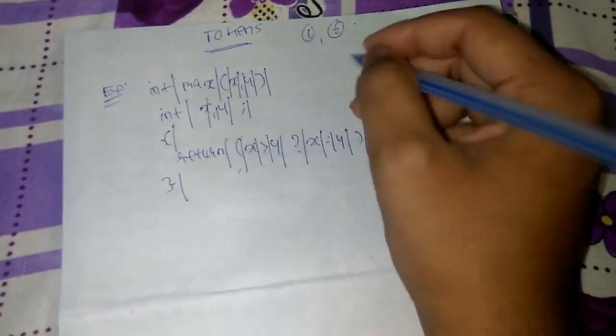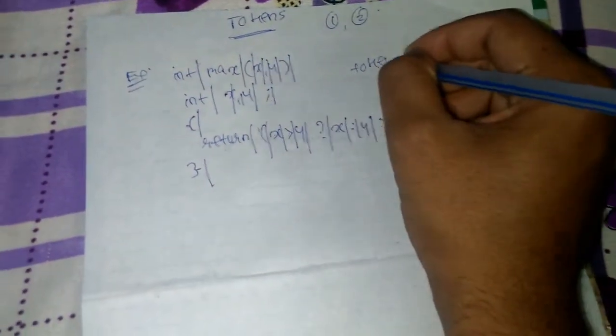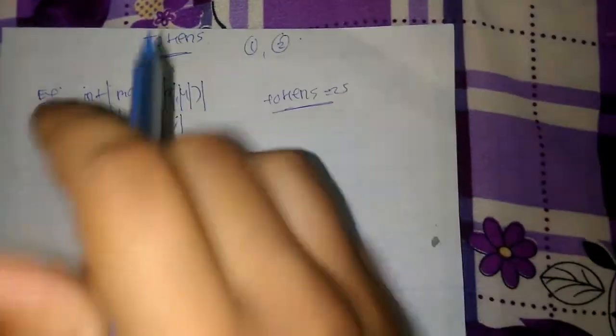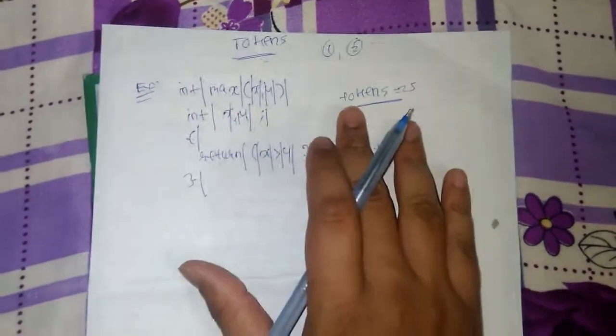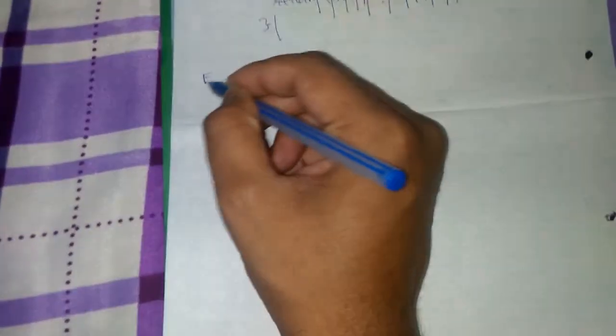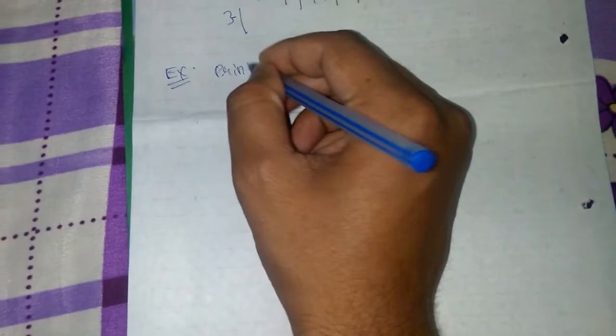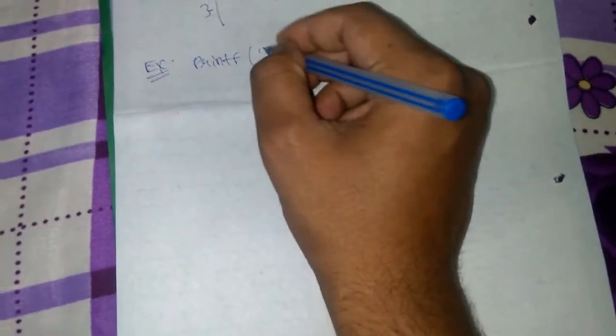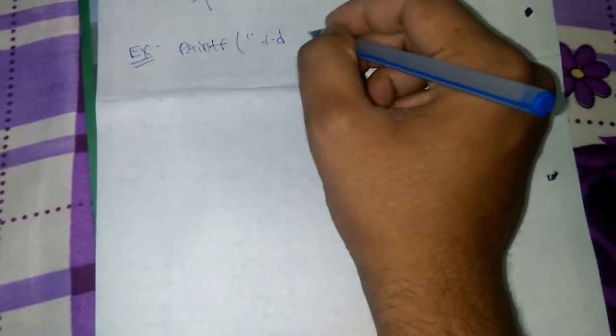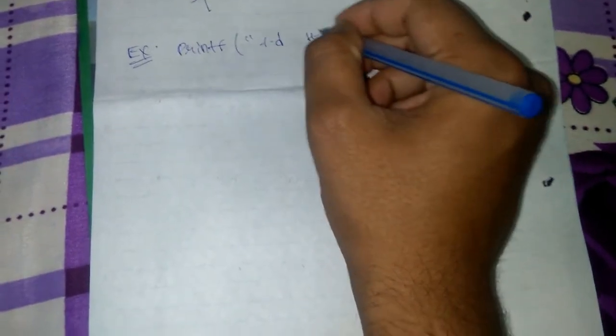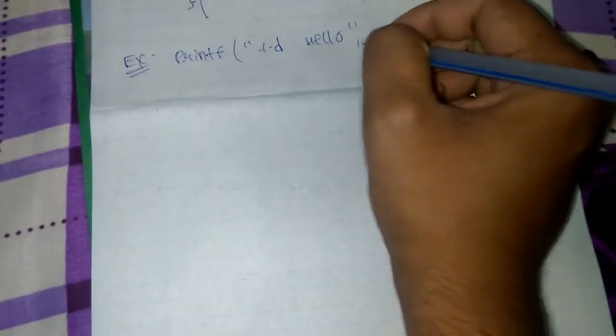This is basically how we can count the number of tokens. Let's take another type of example like printf, person d, hello, then address of x.